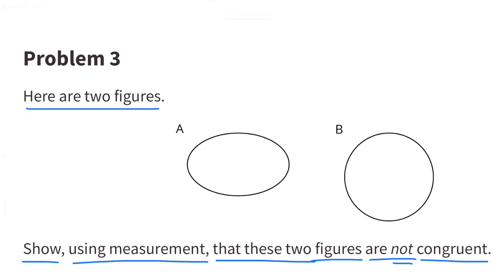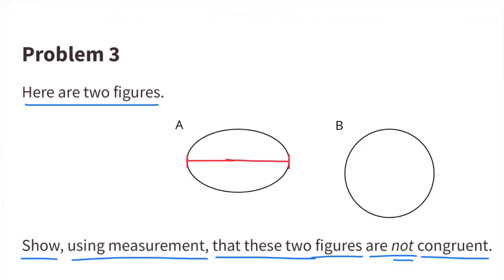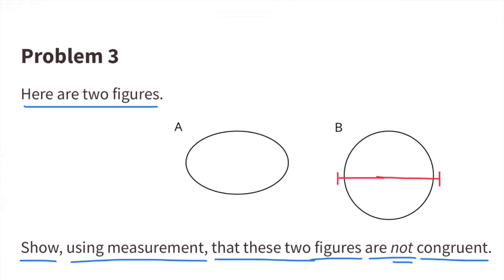Problem 3: Here are two figures. Show, using measurement, that these two figures are not congruent. This red marker marks the width of Figure A. In comparison to Figure B, the red marker is just a little bit wider. This is one way to tell